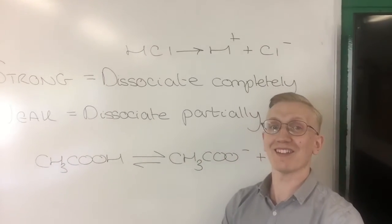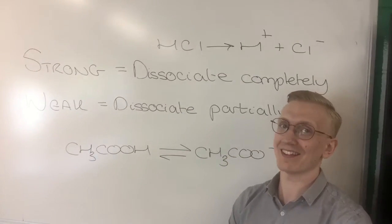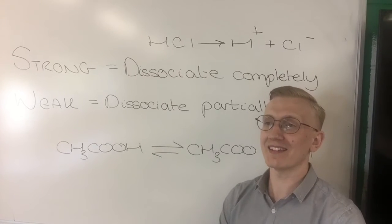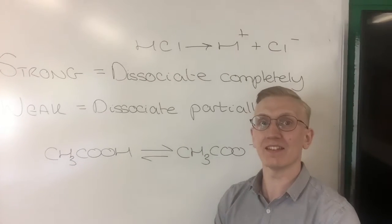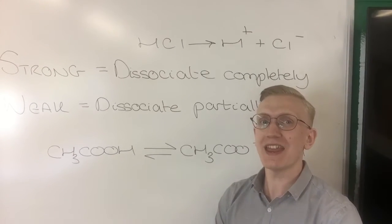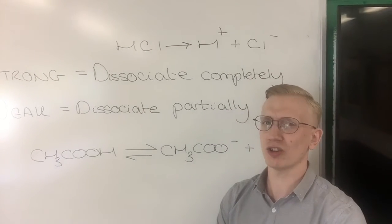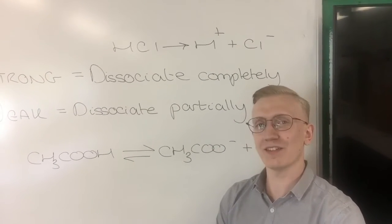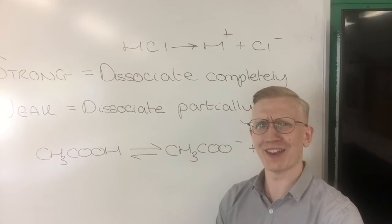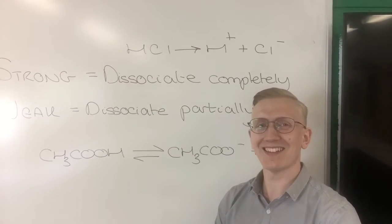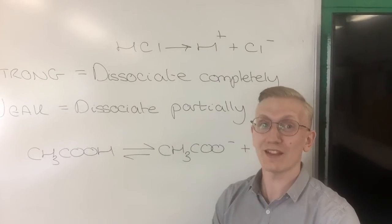Now, what you've then got as a comparison is what a weak acid is. A weak acid is essentially organic acids, so carboxylic acids. They only dissociate partially, which means, as you can see here, this is ethanoic acid's equilibrium to release its proton.